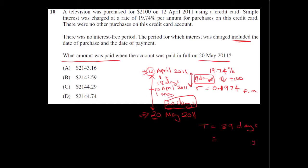What's that in years? What's 39 days in years? It's 39 out of 365 days in a year. It's 39 over 365 years. So that's important because our rate is in per annum, our time has to be in years.